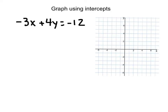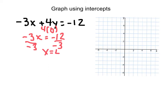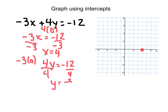Go ahead and graph using the x and y-intercepts. Pause your video and then restart it to check your work. Welcome back. For the x-intercept, if y is 0, the y-term drops out, giving negative 3x equals negative 12. Dividing both sides by negative 3, we get x equals positive 4 — there's the x-intercept. The y-intercept is when x is 0, so the x-term drops out, leaving 4y equals negative 12. Dividing both sides by 4 gives y equals negative 3. Now draw your line — and there's our graph.